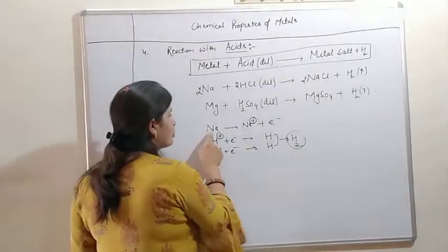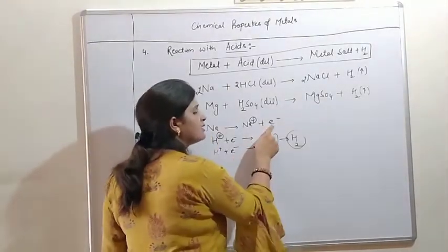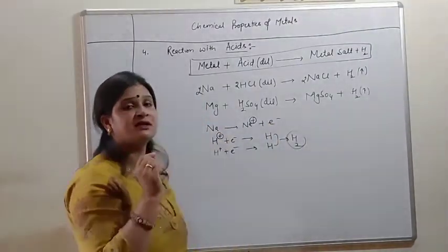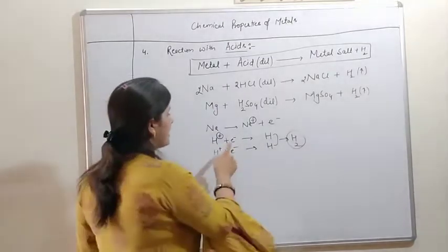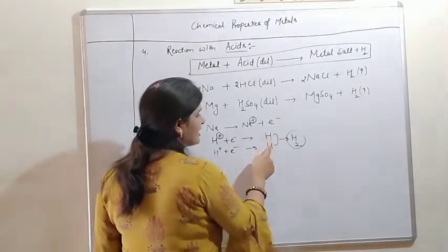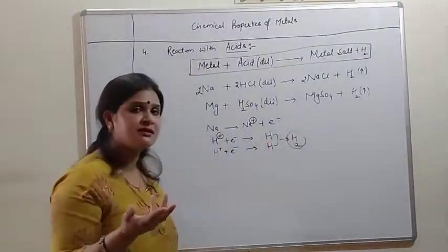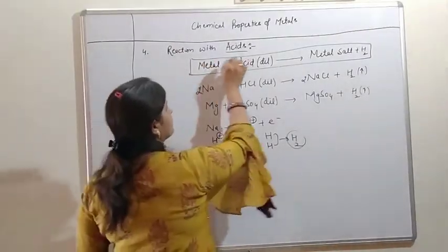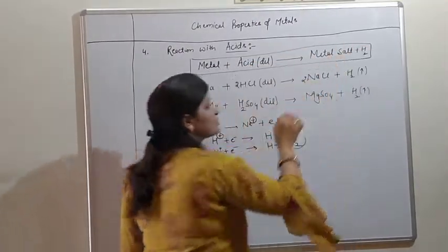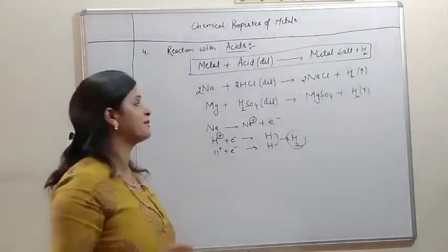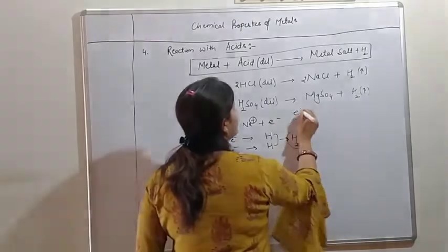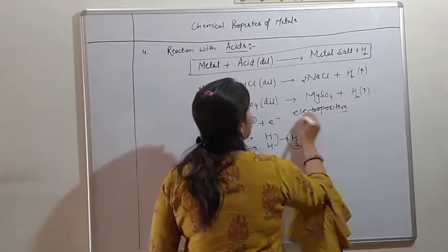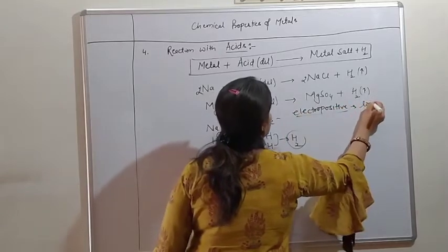Metals like sodium react with acid to release hydrogen gas only because they are electropositive. They have the tendency to lose electrons.